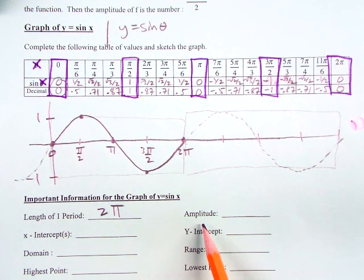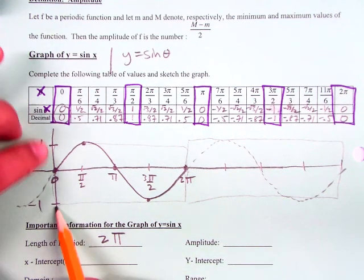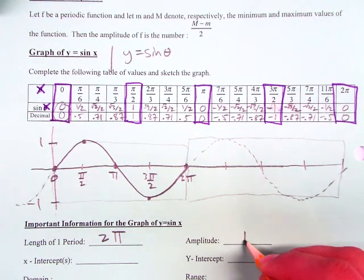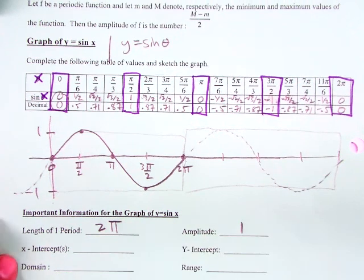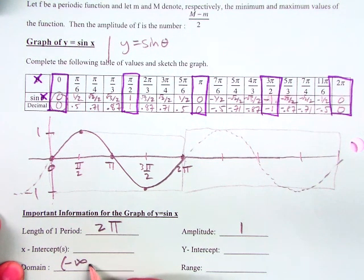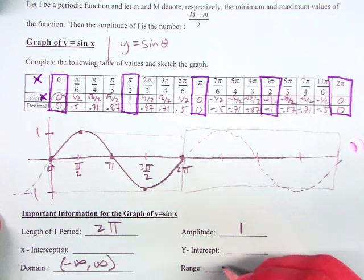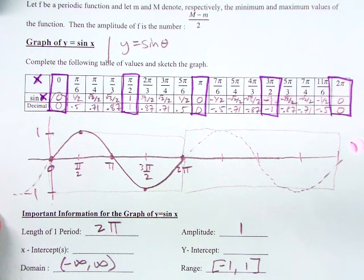The amplitude, how do we find it again? You take the highest and lowest point and then divide by 2. So what's the length from negative 1 to 1? 2. 2 cut in half is 1. The domain is negative infinity to infinity. The range is negative 1 to 1.